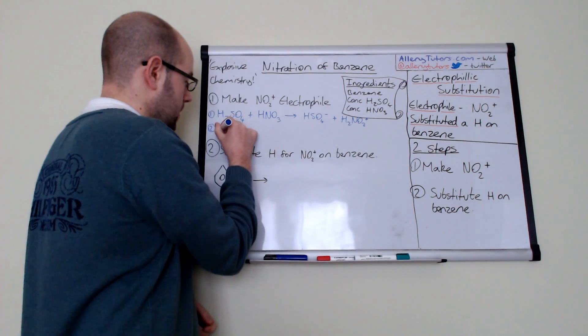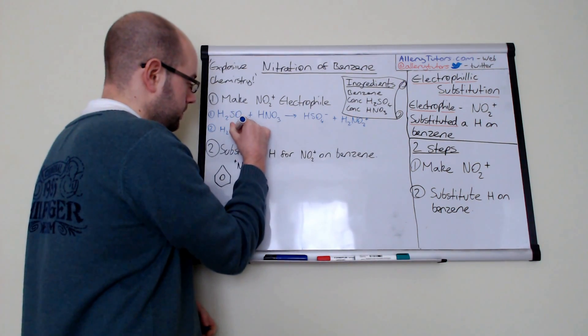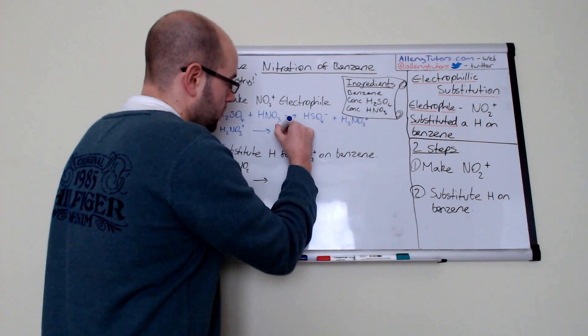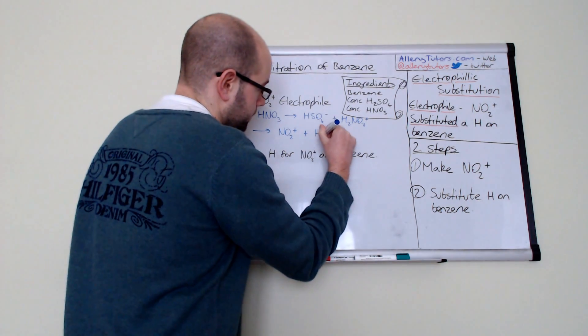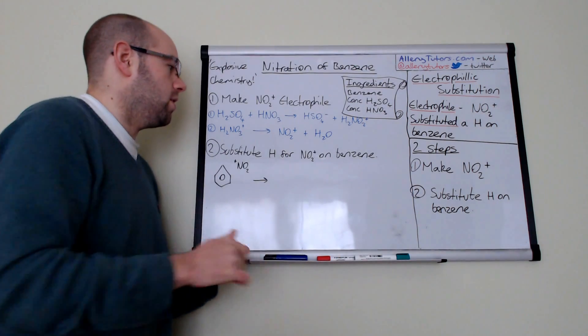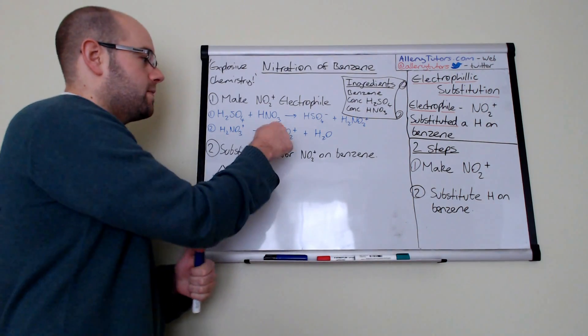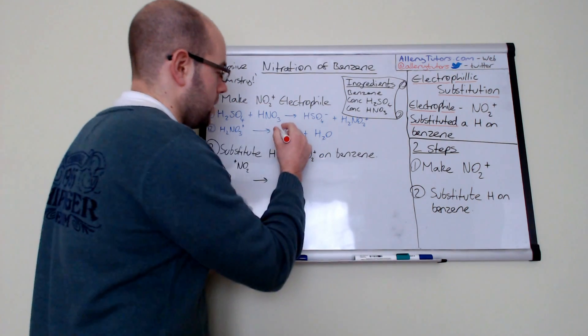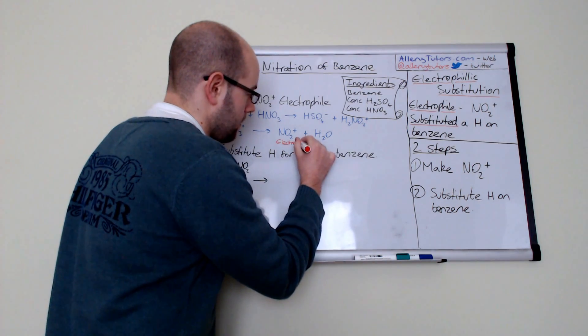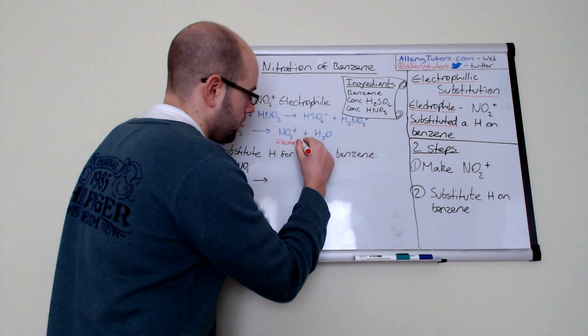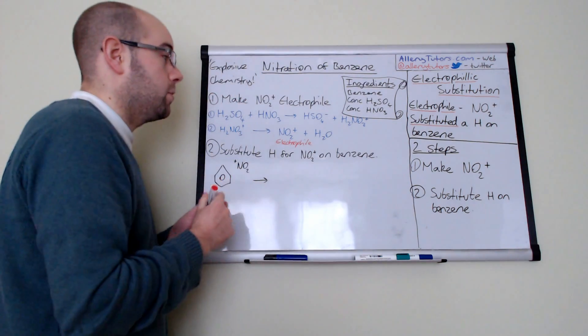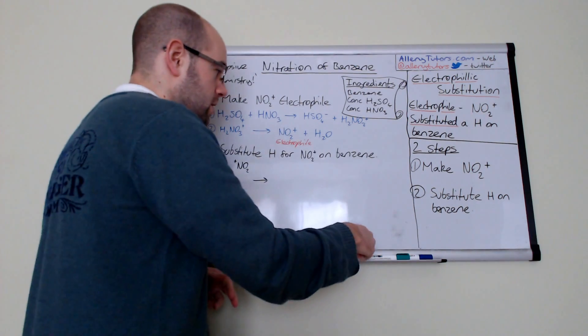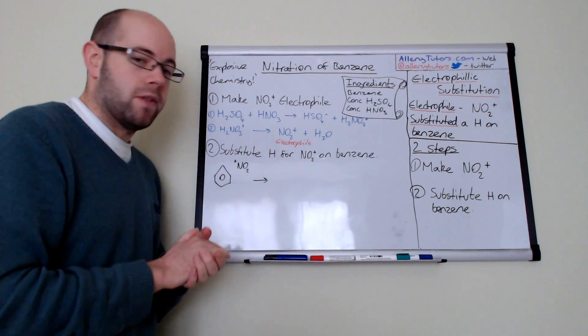What happens is this molecule H2NO3+ will actually decay to form NO2+ plus H2O. We call this our nitronium ion. This NO2+ is your electrophile, and it's very, very reactive. This is done separately in a separate beaker and we've made our electrophile.